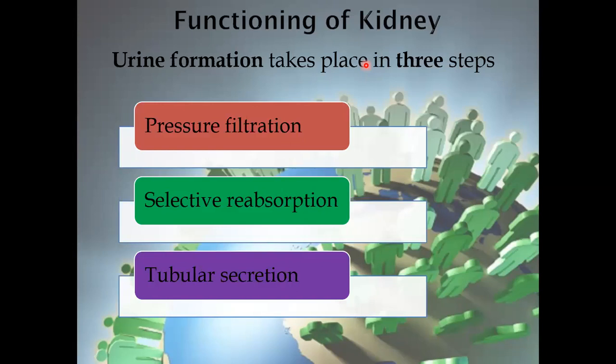Now, the functioning of the kidney. The important functions of the kidneys are: first, urine formation; and second, their osmoregulatory role, which will be discussed in the next lecture. Urine formation takes place through three steps: number one, pressure filtration; number two, selective reabsorption; and number three, tubular secretion.